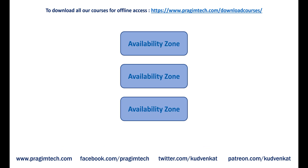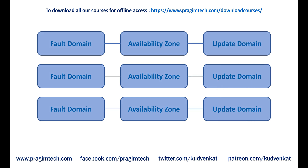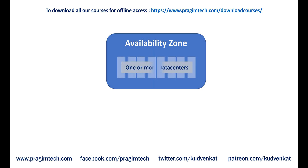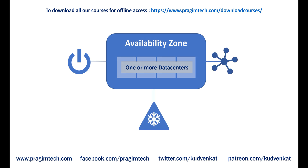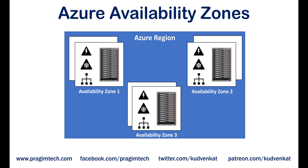Availability zones also have the concept of fault domains and update domains. An availability zone is a unique physical location within an Azure region. Each availability zone is made up of one or more data centers with independent power, cooling, and networking.